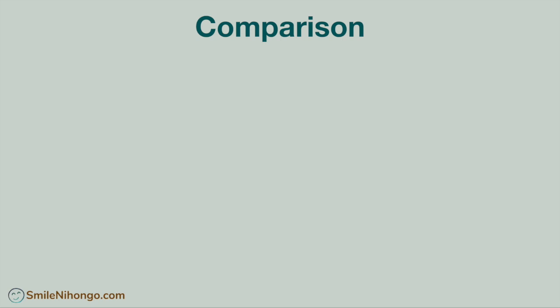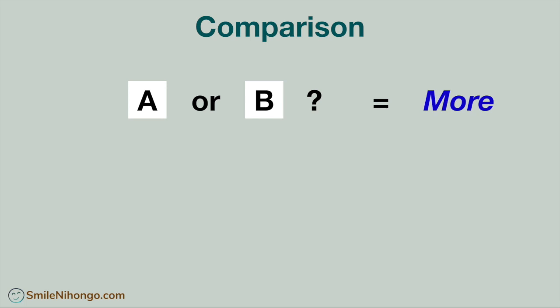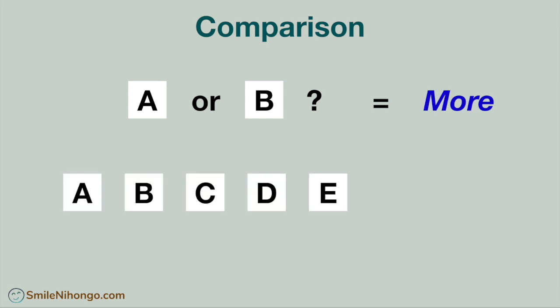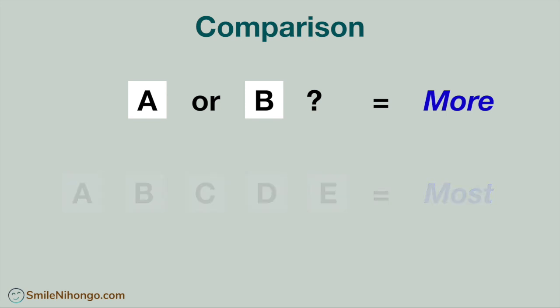There are two types of comparison. When you have only two options to compare, you say A or B, which is more. When you have more than two options to compare, you say out of all the options, what is most? Today in this lesson, we are going to learn how to compare two options in Japanese.